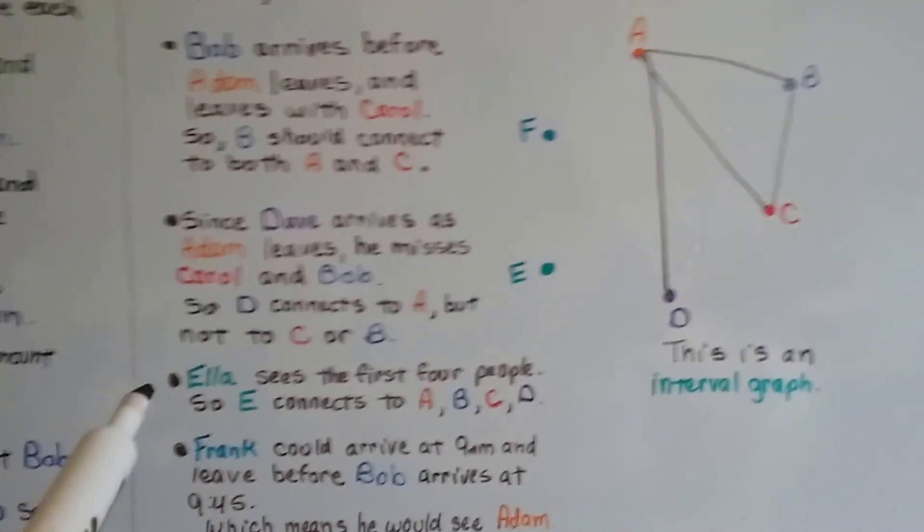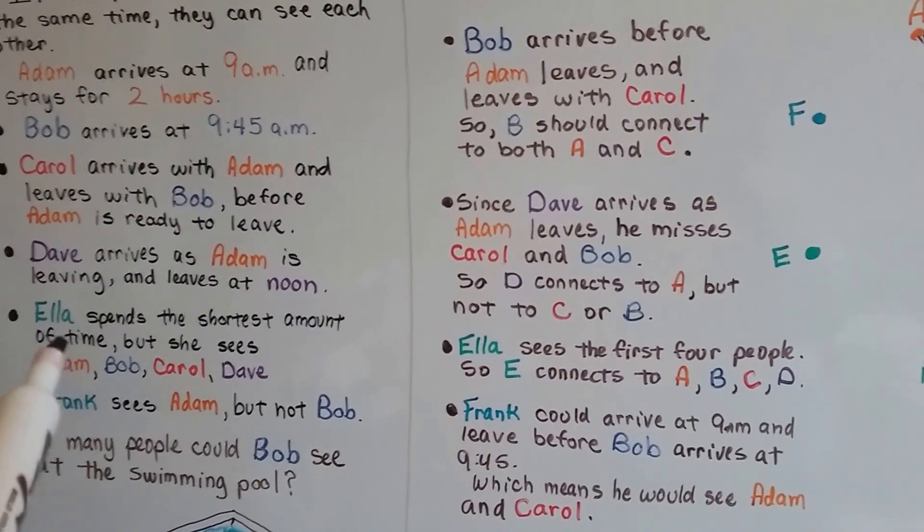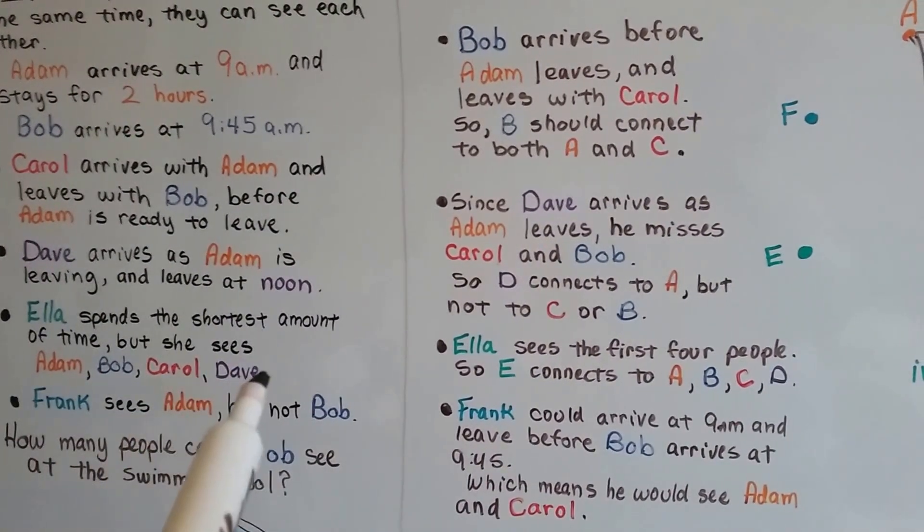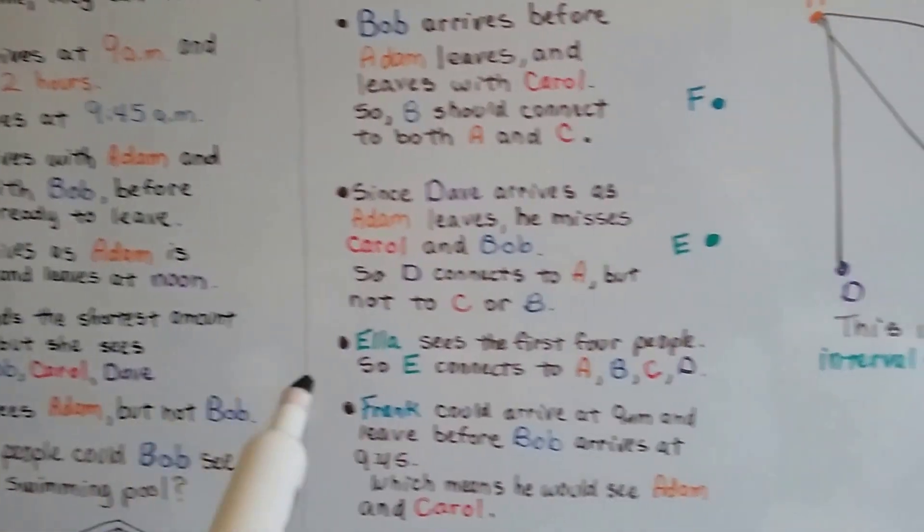Ella sees the first four people. Ella spends the shortest amount of time but she sees Adam, Bob, Carol, and Dave. That means we need to connect E to A, B, C, and D.